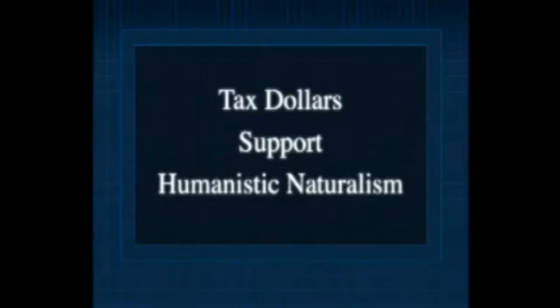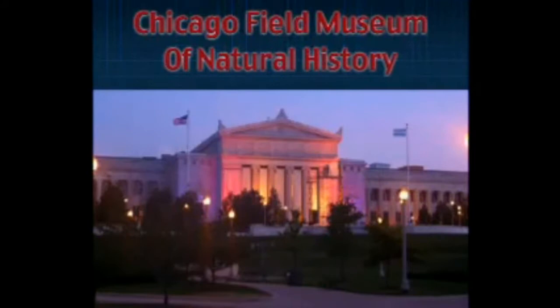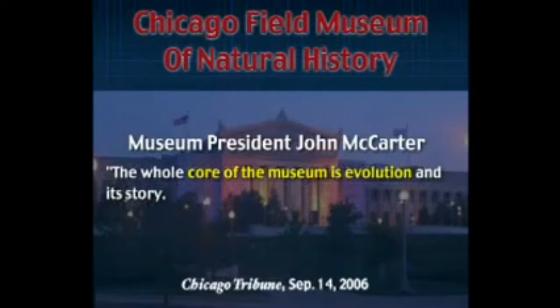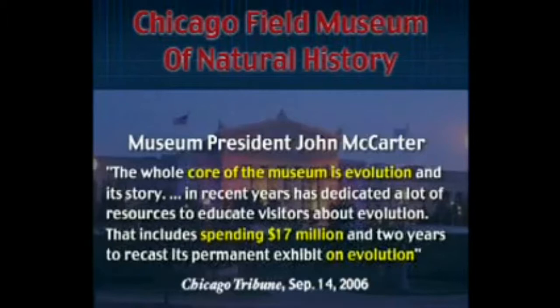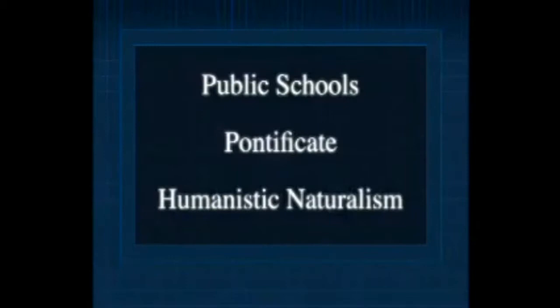That is the religion that is established in our country. Our constitution says you cannot have a state religion established and supported by the state, but we do. It is the religion of naturalism — defined by the courts as a religion — that is promoted in our schools to the exclusion of all other religions, as propaganda, and our tax dollars support it by the billions. One very obvious example: the Chicago Field Museum of Natural History, according to the Chicago Tribune just last year, said the core of the museum is evolution. In recent years it has dedicated a lot of resources to educate visitors about evolution, including spending seventeen million dollars in two years to recast its permanent exhibit on evolution. We are paying for that. That is the establishment of religion in our country.